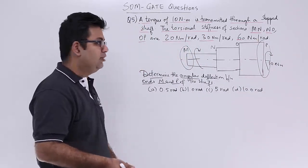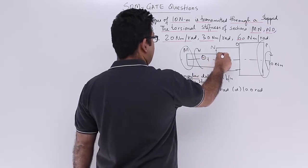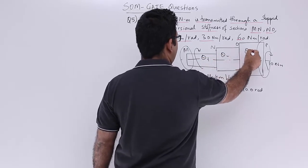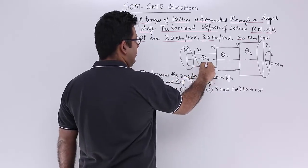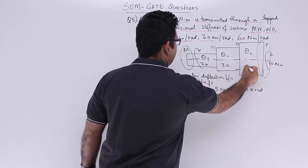So in another cell, I need to find out theta 1, theta 2 and then theta 3. The torsional stiffness for this is 20, this is 30 and this is 60.